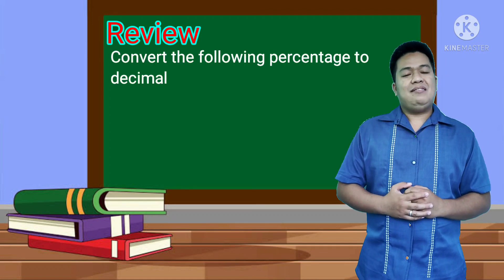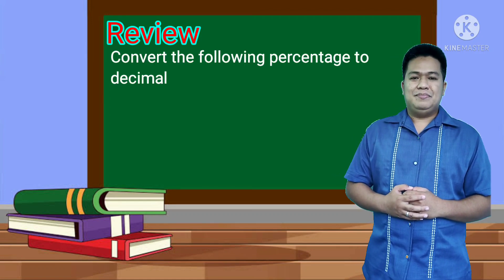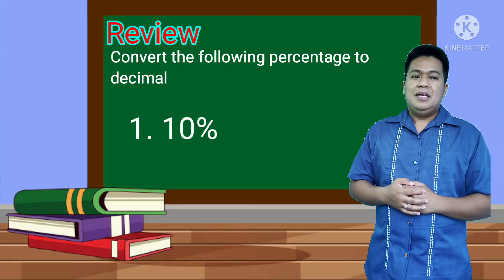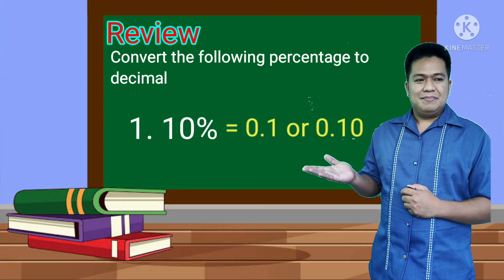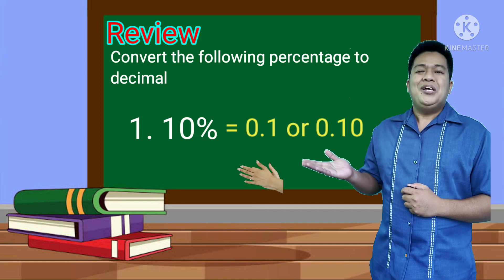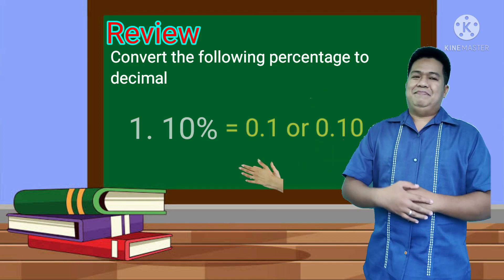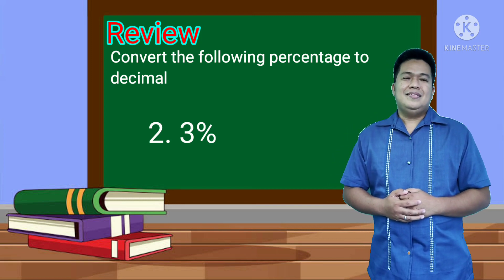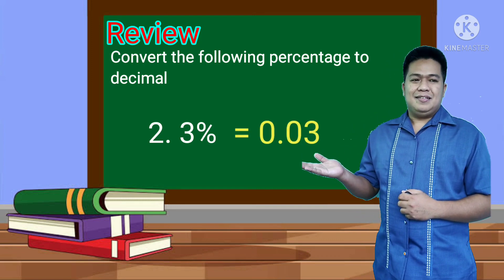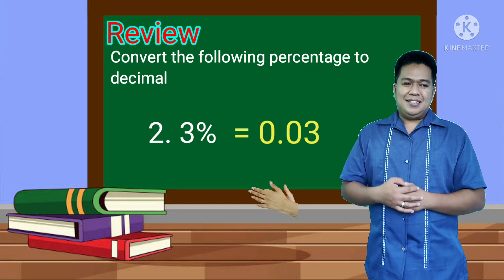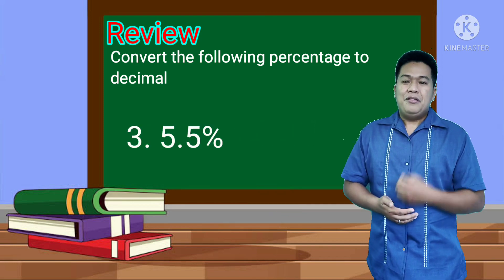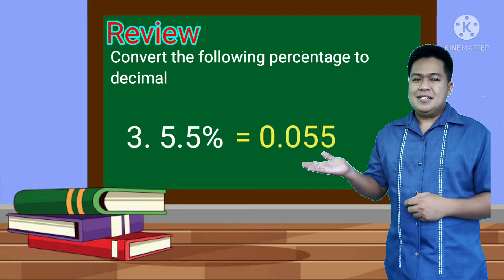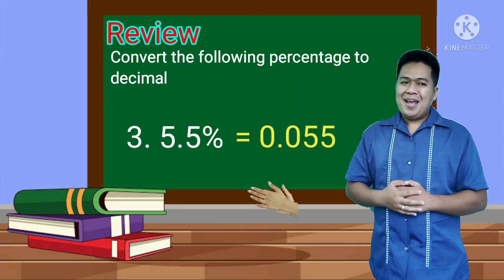Convert the following percentage to decimal. Number 1 — if your answer is correct, you are correct! Number 2 — if your answer is right, you are great! Number 3 — if your answer is correct, you are amazing!